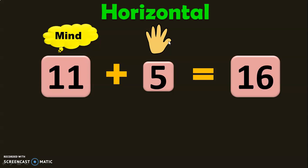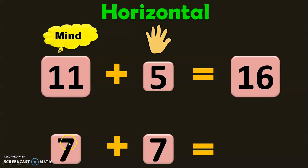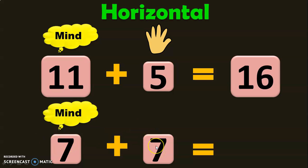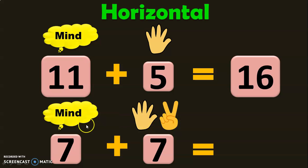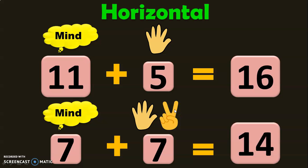Let us do another example: 7 plus 7. So 7 in the mind. To keep 7 in the fingers, you will have 5 fingers on one hand and 2 fingers on the other hand. So after 7, it is 8, 9, 10, 11, 12, 13, and 14. So 7 plus 7, the sum is equal to 14.